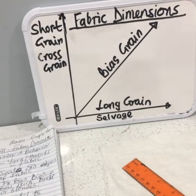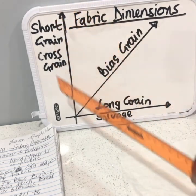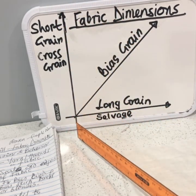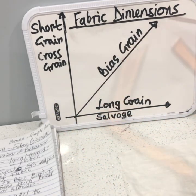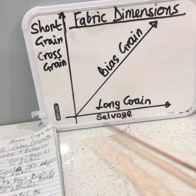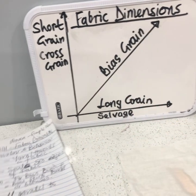I've reduced this into a small piece of fabric so you can understand better. We have the long grain this way, the short grain that way, and then we have the bias grain. Any fabric that you take, as far as it's woven, it has these three dimensions to them. I'm going to explain what the long grain is, what the short grain is, and what the bias grain is.